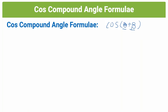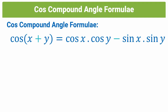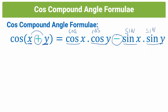The compound angle formula allows us to evaluate these kinds of expressions. Our first cos compound angle formula is for adding two angles, x and y. If we have cos of the sum of two things, it equals cos x times cos y minus sin x times sin y. The way I like to remember this is: cos, cos, sin, sin, and a change in sign — because we had a plus and there's a minus.